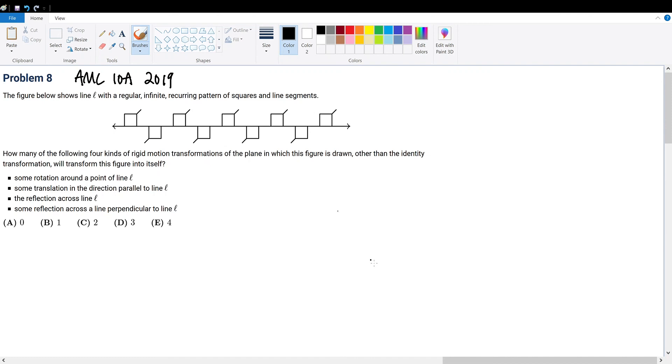AMC 10A 2019 problem 8. The figure below shows line L with a regular infinite recurring pattern of squares and line segments. How many of the following four kinds of rigid motion transformations of the plane, other than the identity transformation, will transform this figure into itself?